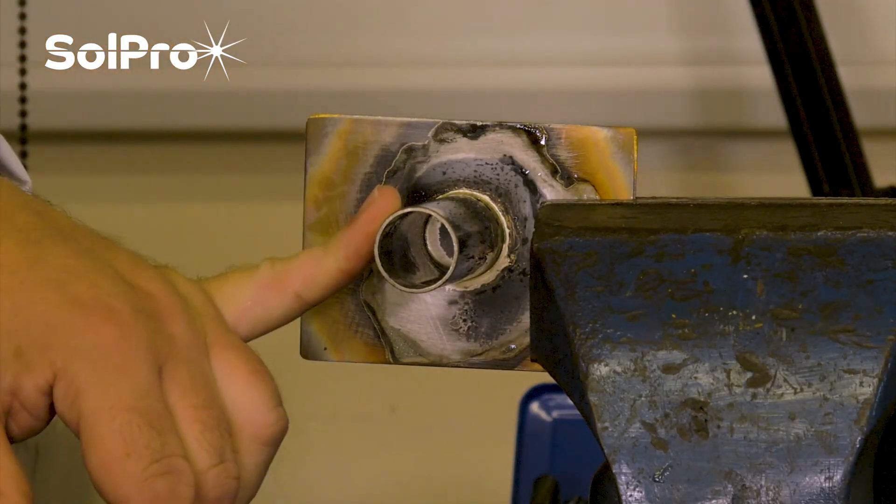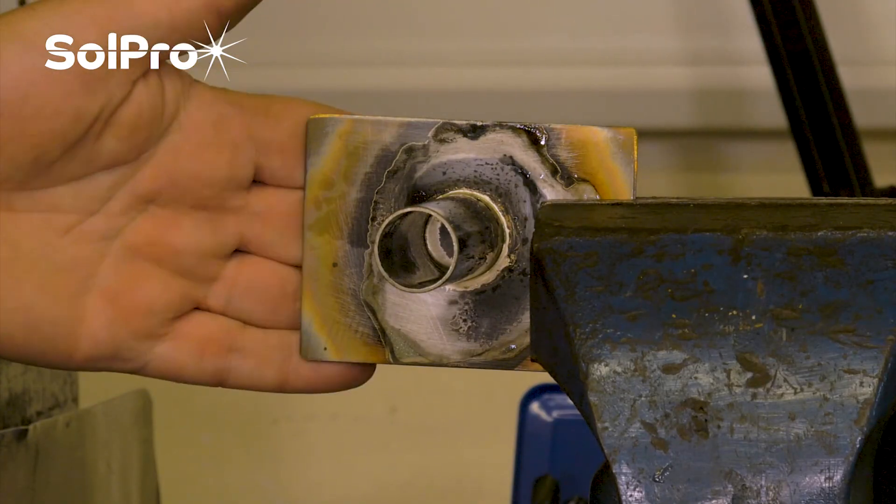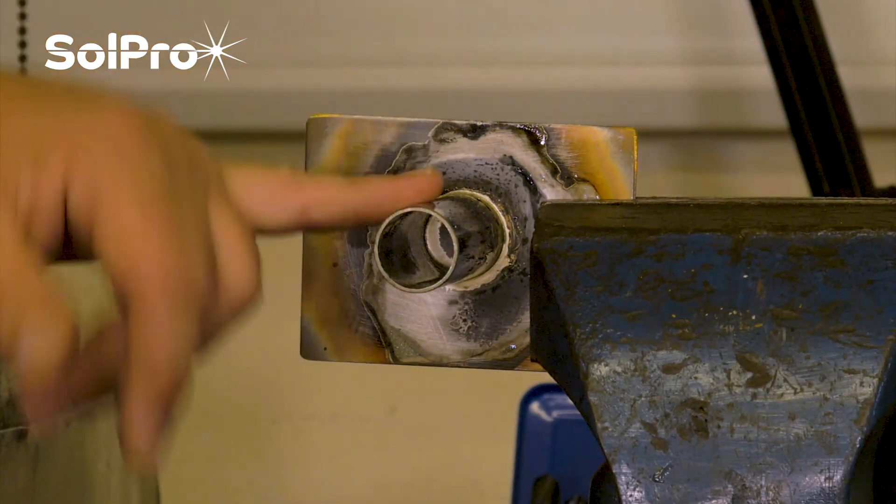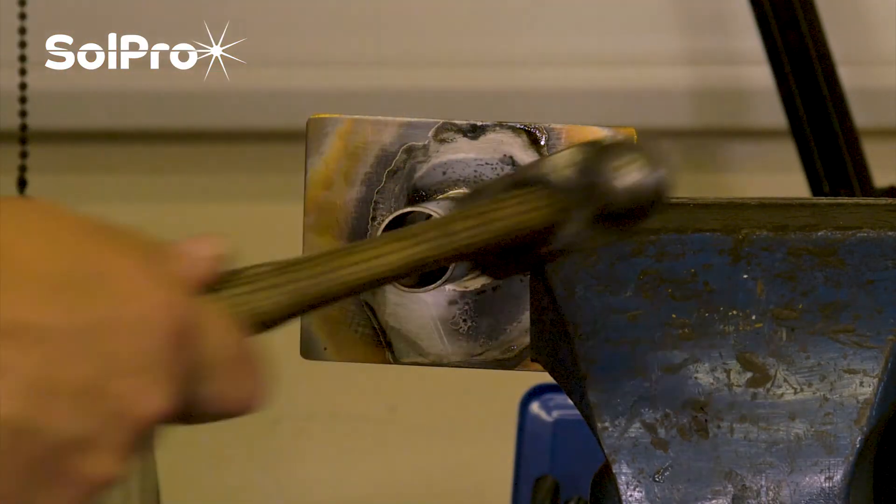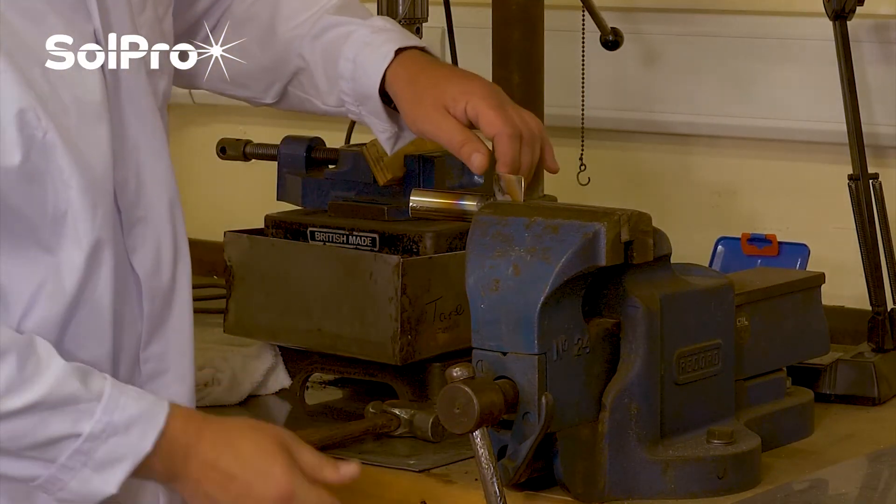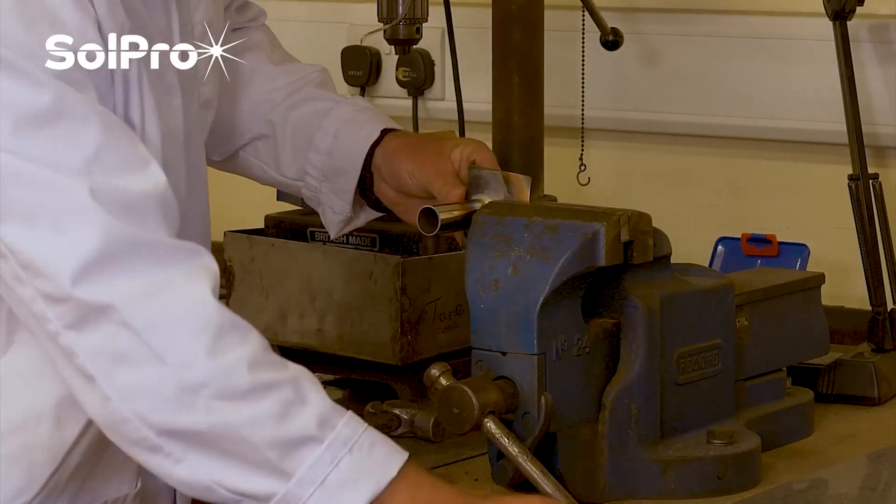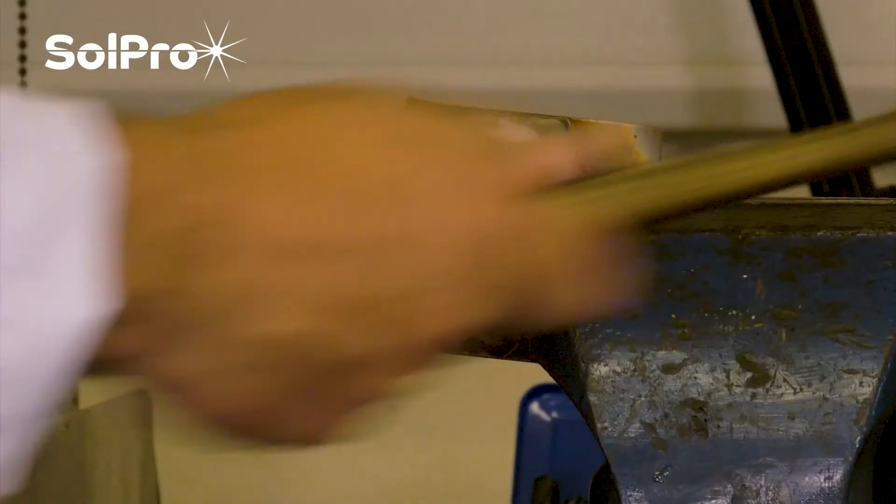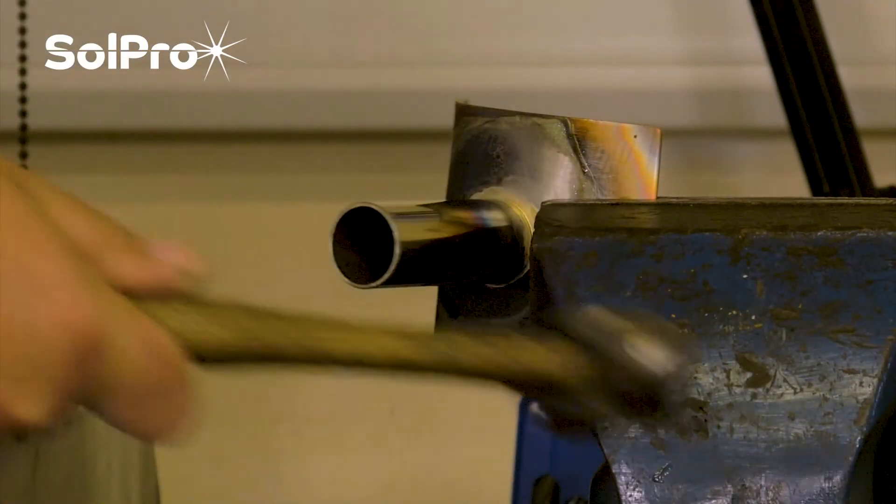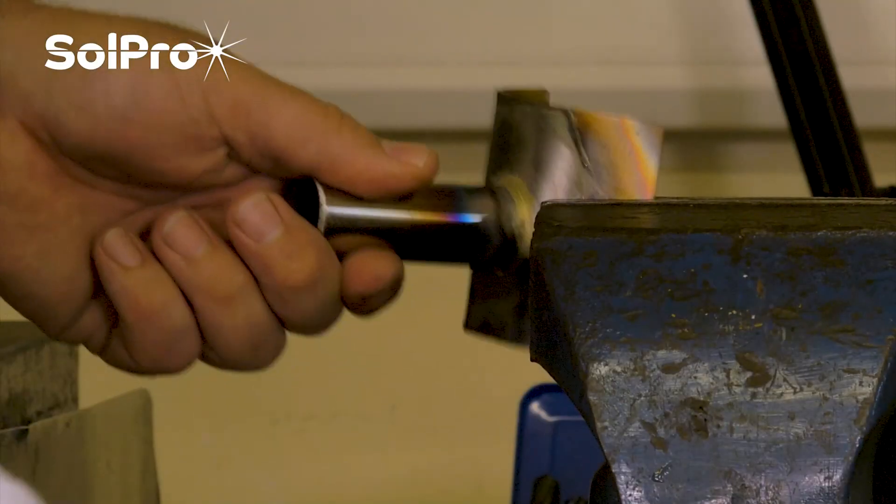Here we've got the stainless tube that we've brazed with the Silver Braze 55T onto a stainless plate. The joint should be as strong as the parent metals. So this is a good test to see how strong the joint is. Undo that, do the same on the other side, get it nice and close to the joint so we're stressing where the joint is. And at that stage we've still got a nice sound joint.